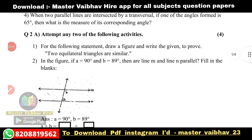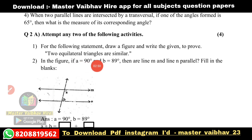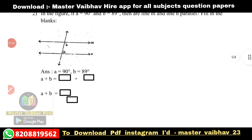For the following statement, draw a figure and write the given: two equilateral triangles are similar. This is the first activity. The second: if angle A is equal to 90 degrees and angle B is equal to 89 degrees, then are the lines L and M parallel? Fill in the blanks.